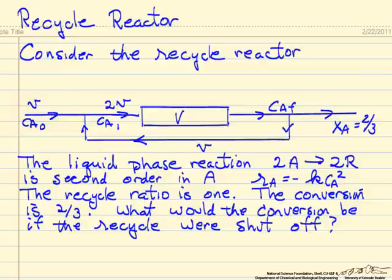We also recycle the same volumetric flow rate so that the volumetric flow rate going into the plug flow reactor is 2V, and we're mixing the outlet with the inlet so this concentration is the average of the two, Ca1. The concentration leaving the reactor is the same as the concentration here and here. This overall system has a conversion of two-thirds.